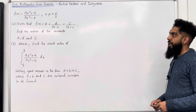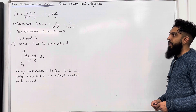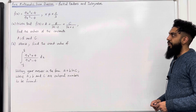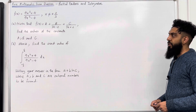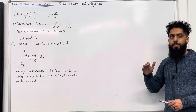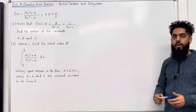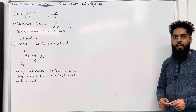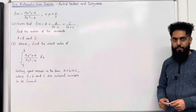Part A: given that f of x is equal to a plus b over 3x minus 2 plus c over 3x plus 2, find the values of the constants a, b and c. Please pause the video, have a go at part A. Once you've got your complete solution, then play the video.